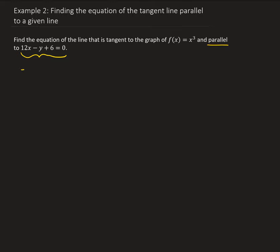So this is going to be minus y equals negative 12x minus 6. We can divide through by negative, so that's going to give us y equals 12x plus 6. That's in y equals mx plus b form, so from here we can go ahead and identify the slope. The slope of this line is 12.